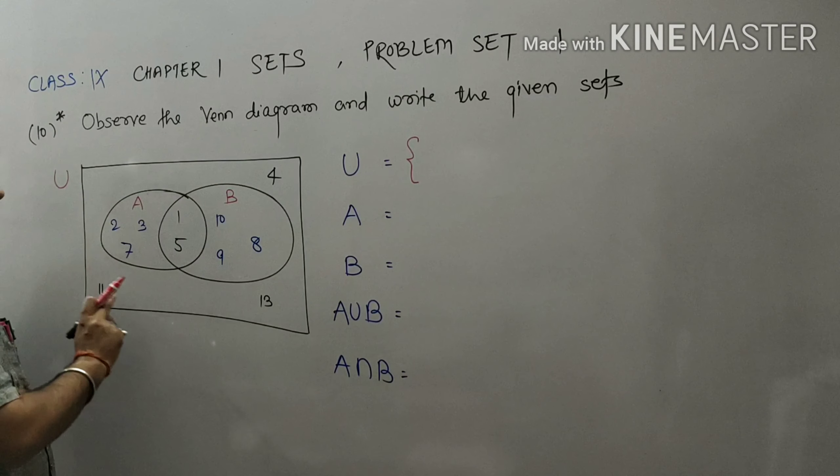So this is our universal set U. The elements of universal set U are 1, 2, 3, 4, 5, 7, 8, 9, 10, 11, and 30.